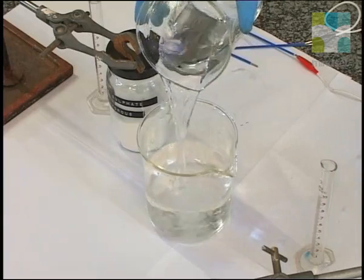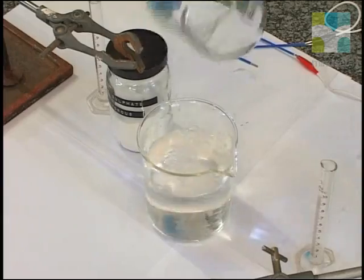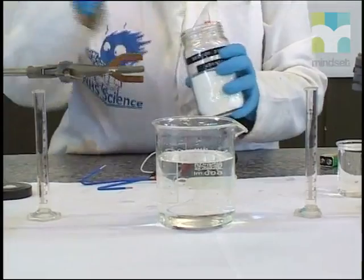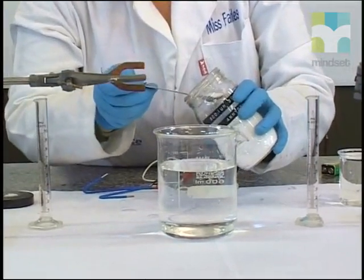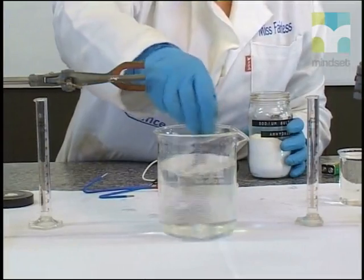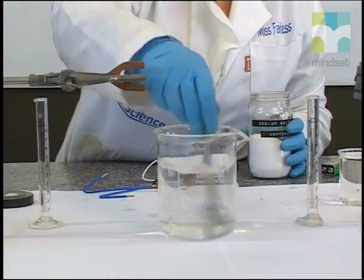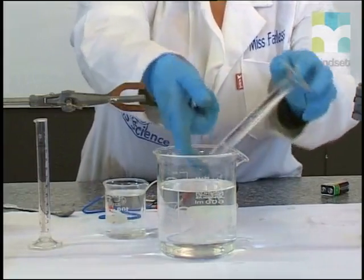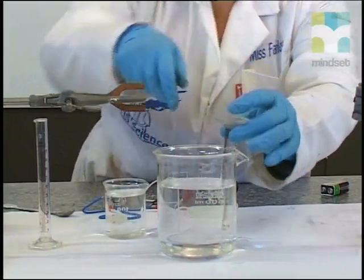We will take a beaker and fill it with clean, clear water. We will add some sodium sulphate to the water. Sodium sulphate is simply added to the water to increase the conductivity of the water. The sodium sulphate does not take part in the reaction at all.